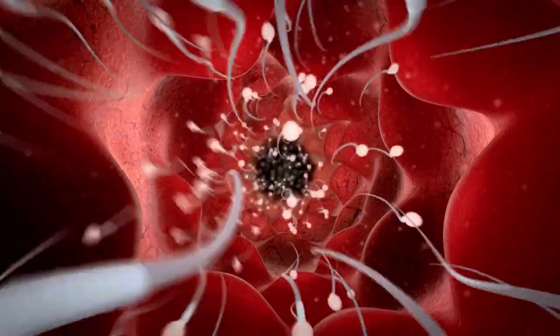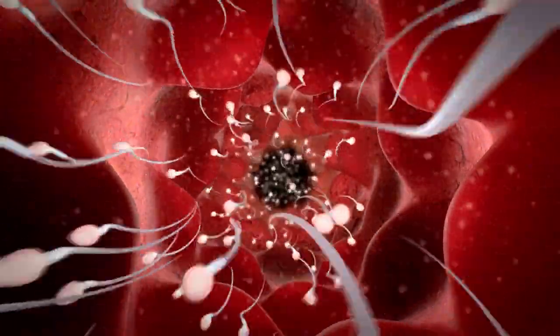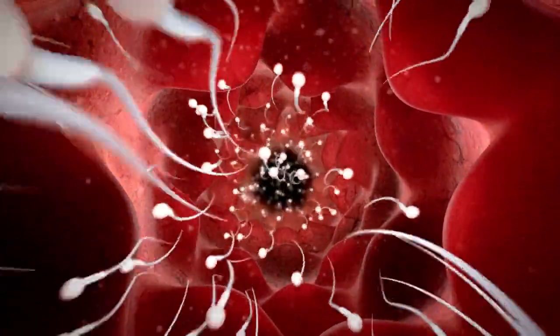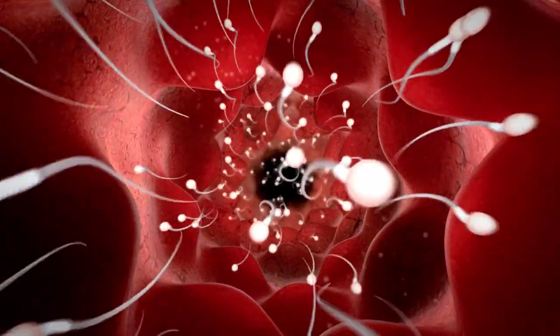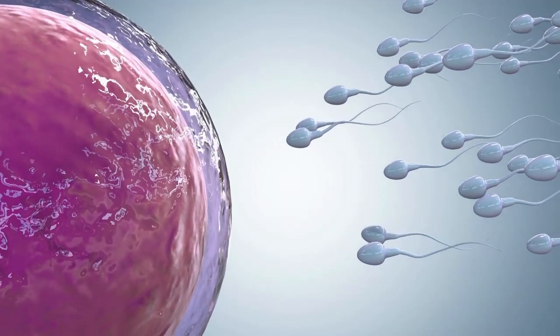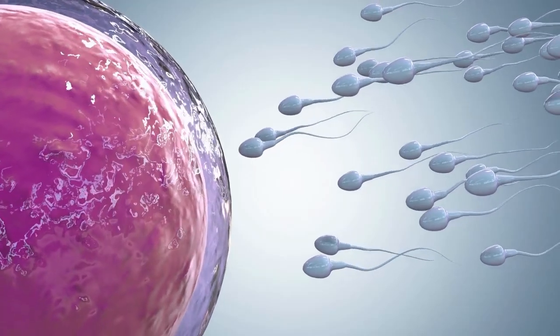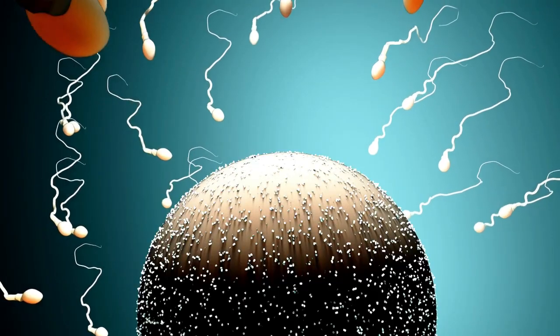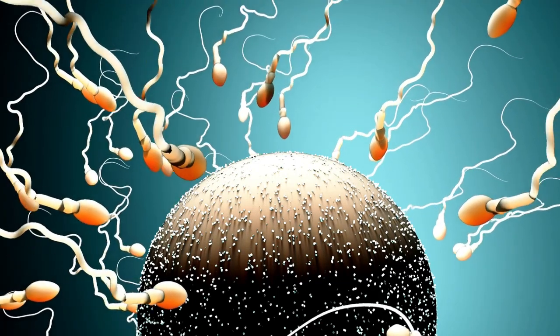The egg is covered with a layer of cells called the corona radiata, which the sperm must penetrate to reach the outer layer known as the zona pellucida. Specialized receptors on the sperm surface enable them to attach to the zona pellucida.